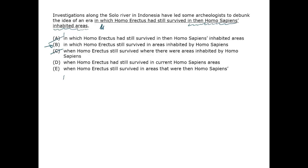So we'll knock out C. D has the same problem as A. E distorts the meaning of the sentence — the intended meaning isn't that any areas belonged to homo sapiens; we're talking about cohabitation.